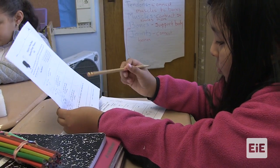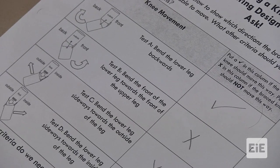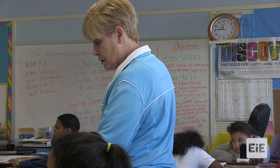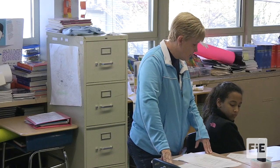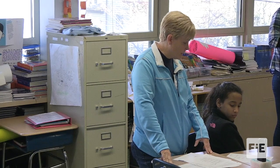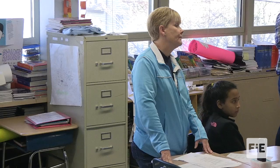Let's go over this together. Let's look at the first diagram of the knee movement. Test A: should you be able to bend the lower leg backwards, Brunaya? Yes, because it's easy for us because our knee is not injured. Let's look at the second one. Test B: should we be able to bend the front of the lower leg towards the front of the upper leg? No. Why? Because if you can, then you have an injured knee. Awesome.